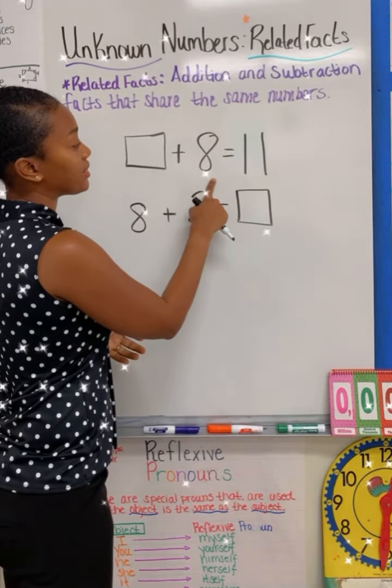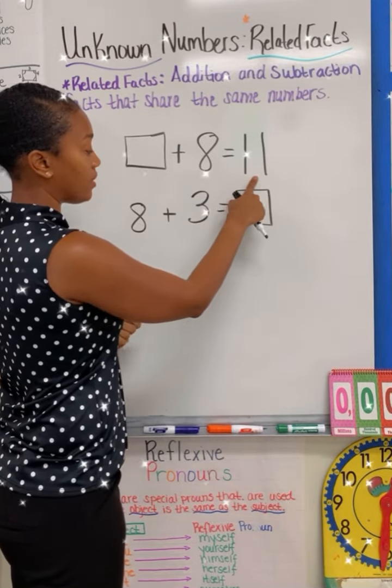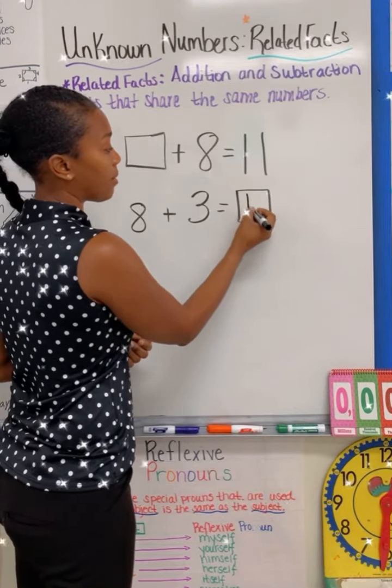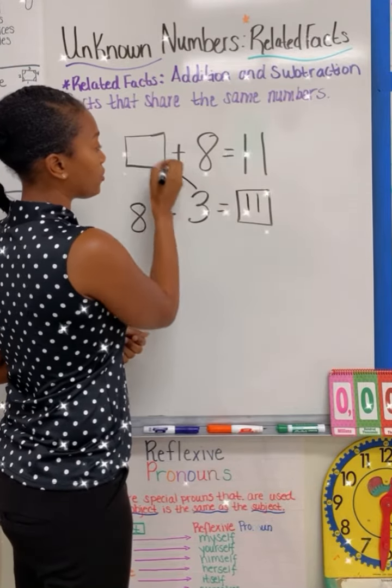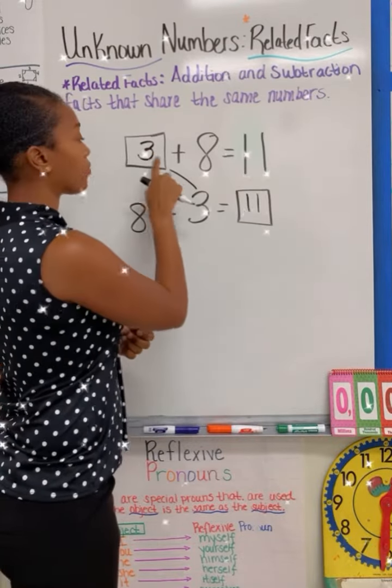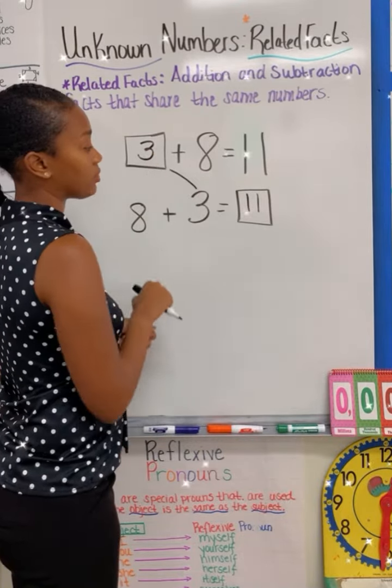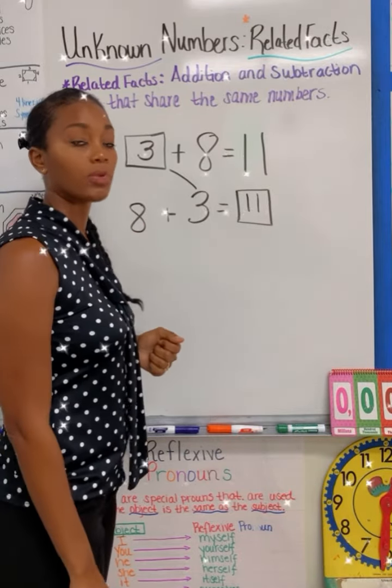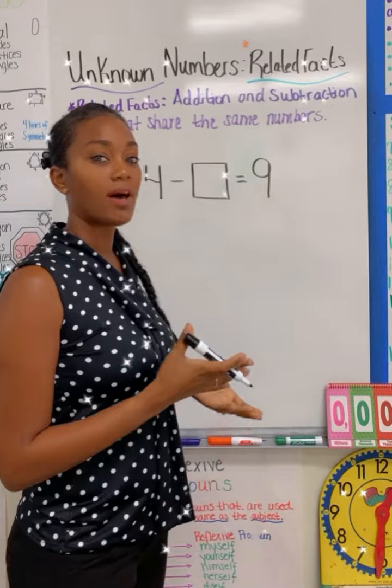If blank plus eight is equal to 11, then eight plus three is equal to this sum, and all I need to do is put my three up here. So three plus eight is equal to 11, and eight plus three is equal to 11.